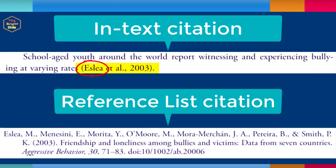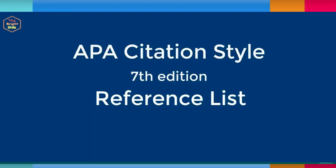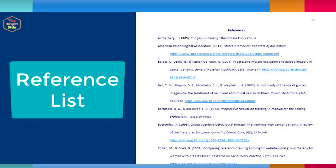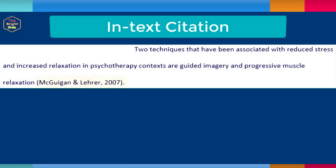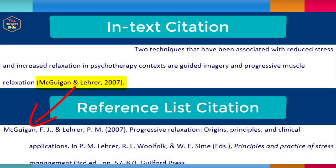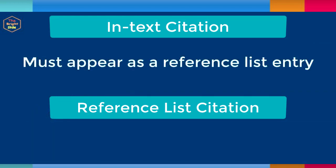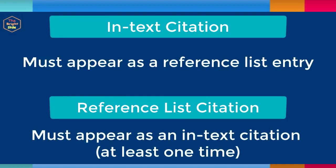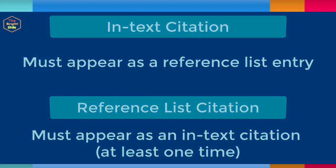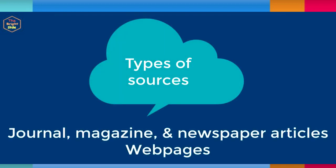The author that is listed in your in-text citation must be the first item that appears in your full citation in the reference list. The reference list is found at the end of your paper and provides detailed information for each source used. While your in-text citation contains the author, date, and sometimes a page number, the citations in your reference list contain much more information. Anyone reading your paper should be able to easily find the resources you consulted. Each source cited as an in-text citation must appear in your reference list, and each source in the reference list must appear as an in-text citation in your paper. We'll cover some common types of sources including journal articles, magazine and newspaper articles, and web pages.